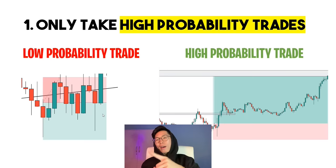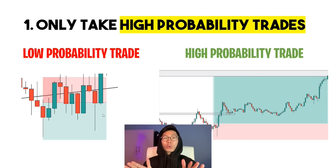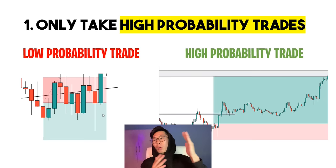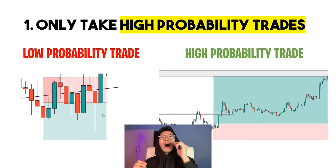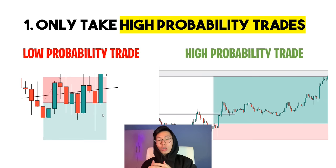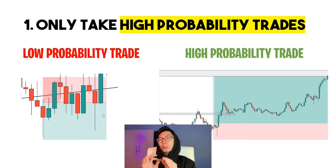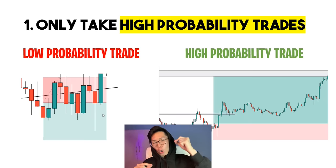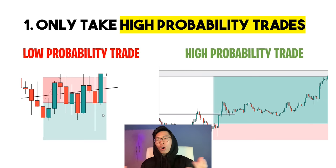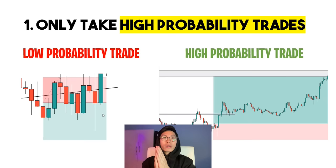The first strategy is to only take high probability trades. You have a small account, so you do not have the luxury to trade normal setups — you need to preserve your capital so that when a high probability trade setup comes along, you're ready. What counts as a high probability trade depends on your strategy. For me, it's when I have multiple confluences telling me to enter — I normally look for at least three, but ideally four or more.